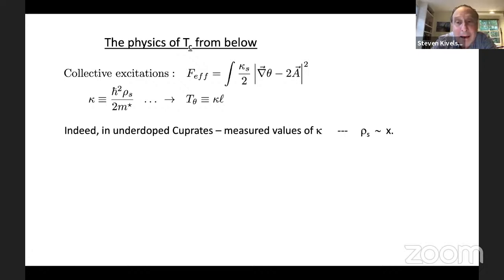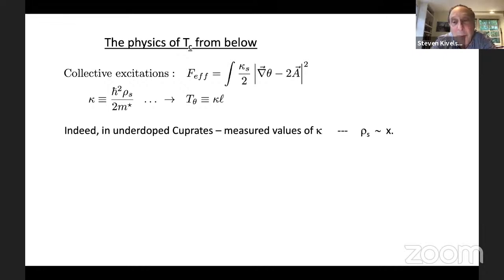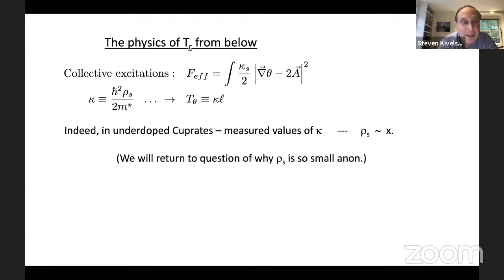The speaker stated that the superfluid density should be proportional to the density of doped holes, and indeed measured values — obtained through measurements of the London penetration depth — show that the superfluid density is, at least in some range of doping, on the order of X rather than 1+X, meaning an order of magnitude reduction in the superfluid stiffness. For now, let's take that as an experimental fact.